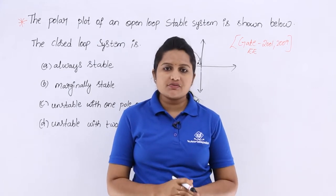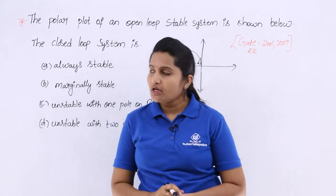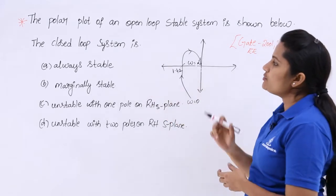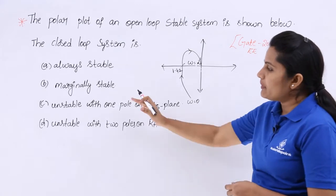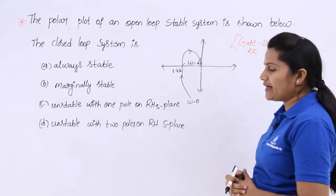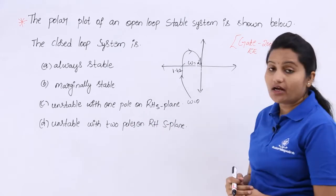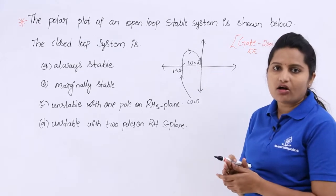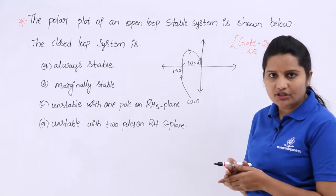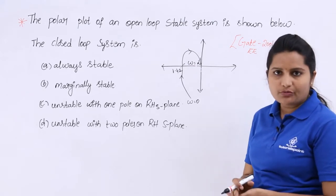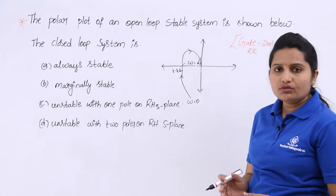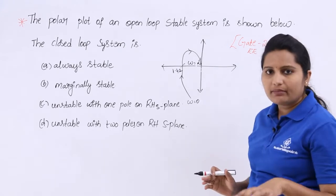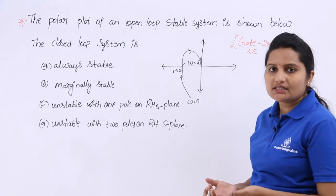In this video we are going to discuss one more GATE problem related to Nyquist plot. The polar plot of an open loop stable system is shown below. The question asks whether the closed loop system is always stable, marginally stable, unstable with one pole on the right half of S-plane, or unstable with two poles on the right half of S-plane. So we need to determine the stability of the closed loop system from the given open loop Nyquist plot.